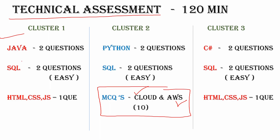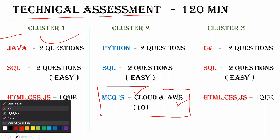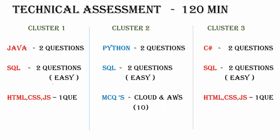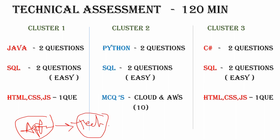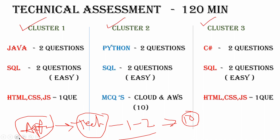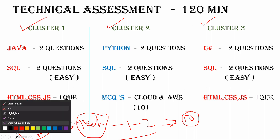Now I will start the video about the technical assessment round. Students will be having the technical assessment round soon, because after completion of the aptitude round — even if you did not clear the aptitude round — you will automatically receive the technical assessment round. The technical assessment round will be received within one to two weeks; most students will receive it within 10 days only.